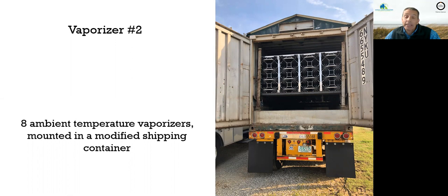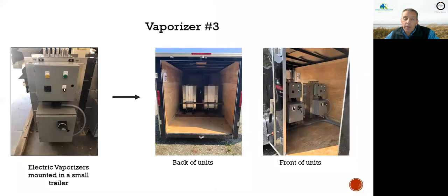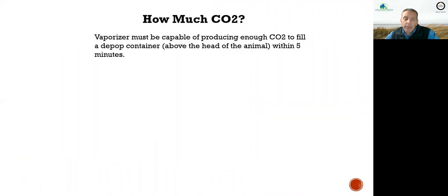This is a heated container, which is why we call it the heat-assisted ambient temperature vaporizer. This one can produce a lot of CO2 vapor very quickly. The third unit: we purchased two electric vaporizers from a commercial manufacturer and mounted them in a small tow-behind trailer that you can tow with a pickup truck. You can see the two units here.